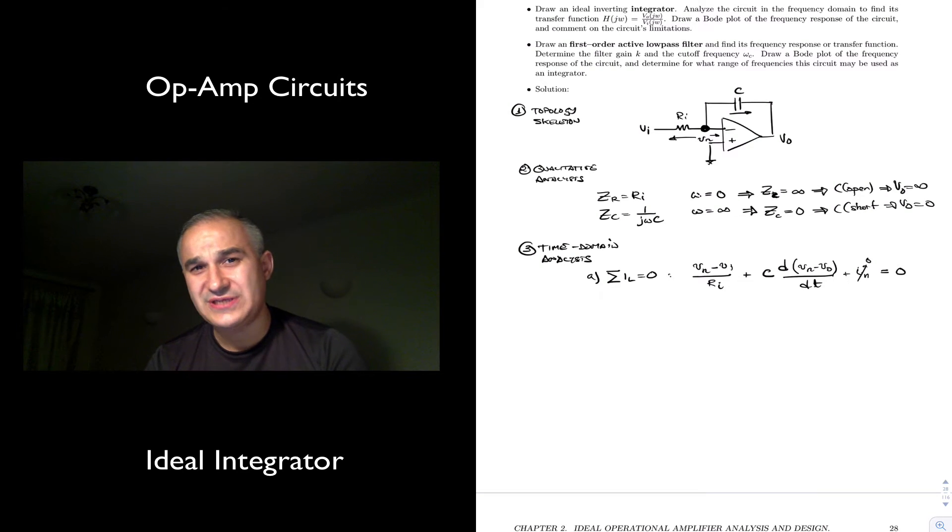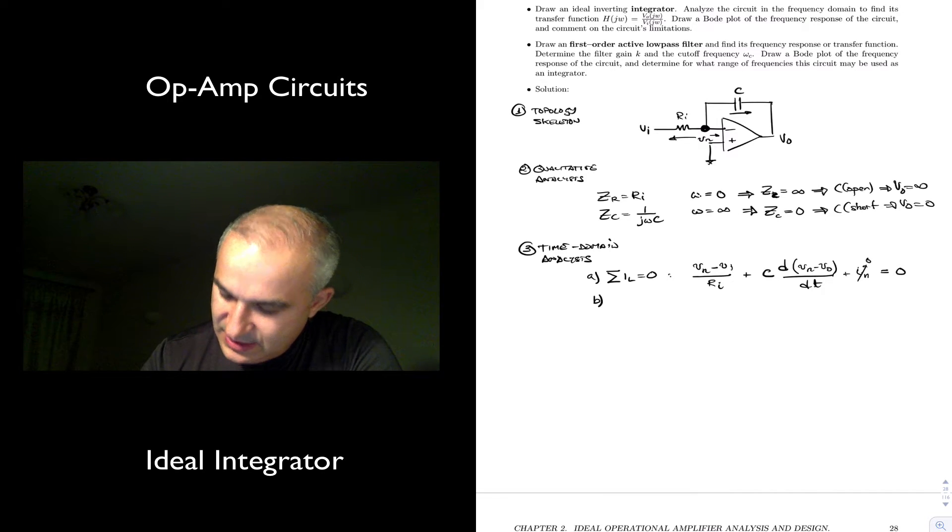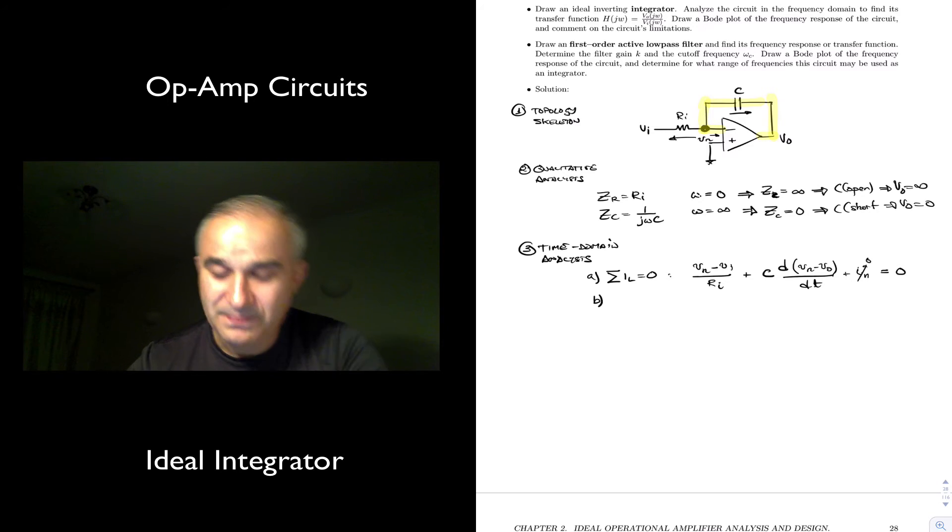Again, this is why we do not do this analysis in the time domain. As you start adding capacitors and inductors, the current voltage characteristics of these devices involve derivatives and integrals, and so you end up with these integral differential equations. So with this, what do we apply? Do we have negative feedback in this case? We do. There's a connection back from the output back to the input.